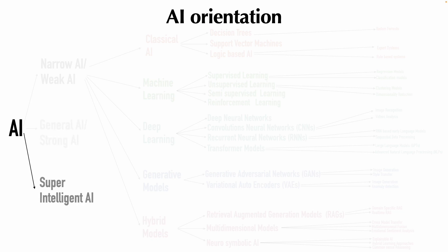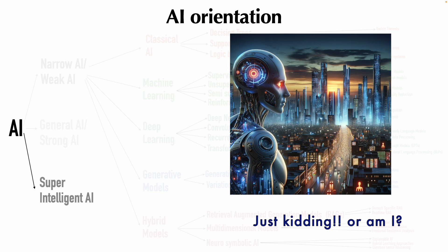Then comes super intelligent AI. What is super intelligent AI? It is basically a hypothetical stage of AI where the capability would significantly surpass that of the brightest and most gifted human minds in practically every field, including scientific creativity, general wisdom, and social skills. Think of it like Terminator movie basically.